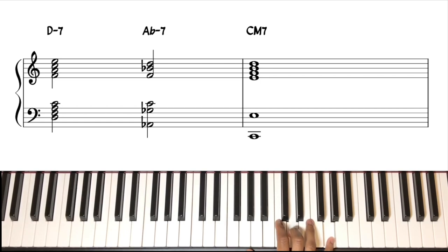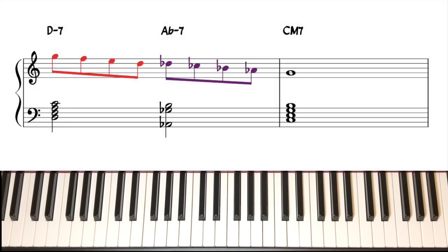The A-flat here is serving as the 2 in a 2-5-1 in G-flat, so this is why it's called drop 5, because you're dropping from G as the 5 to G-flat as the 1.